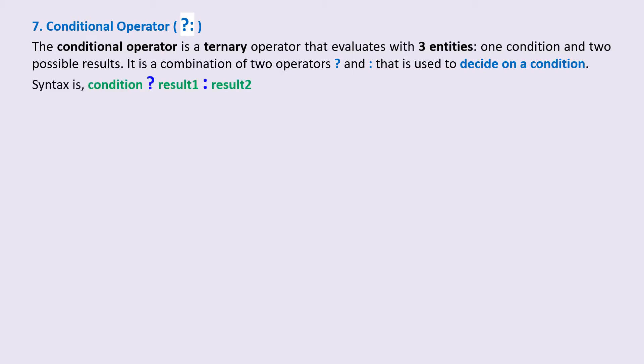The syntax is condition ? result1 : result2. It means that if the condition is true, then result1 is executed, else result2 is executed.